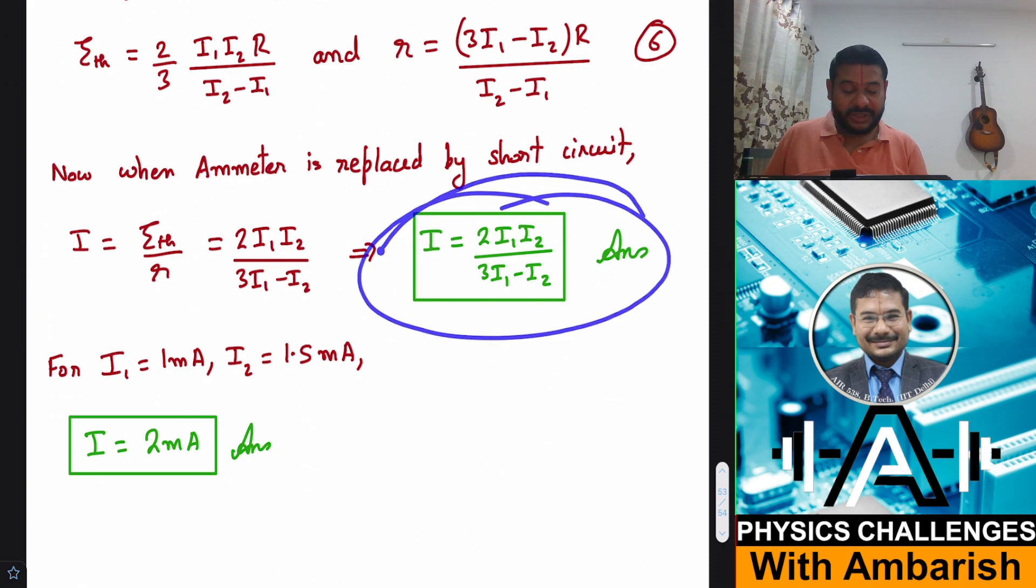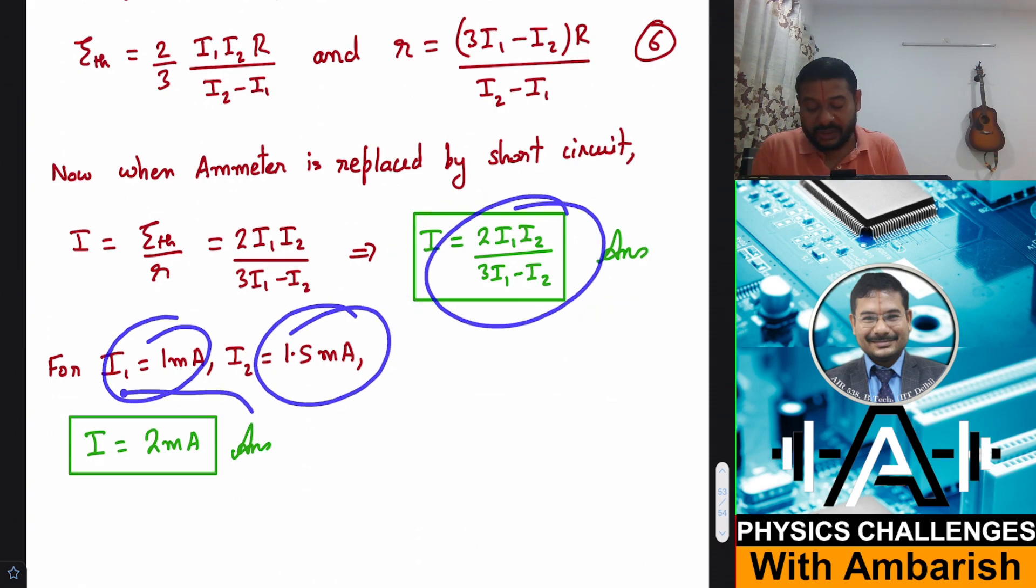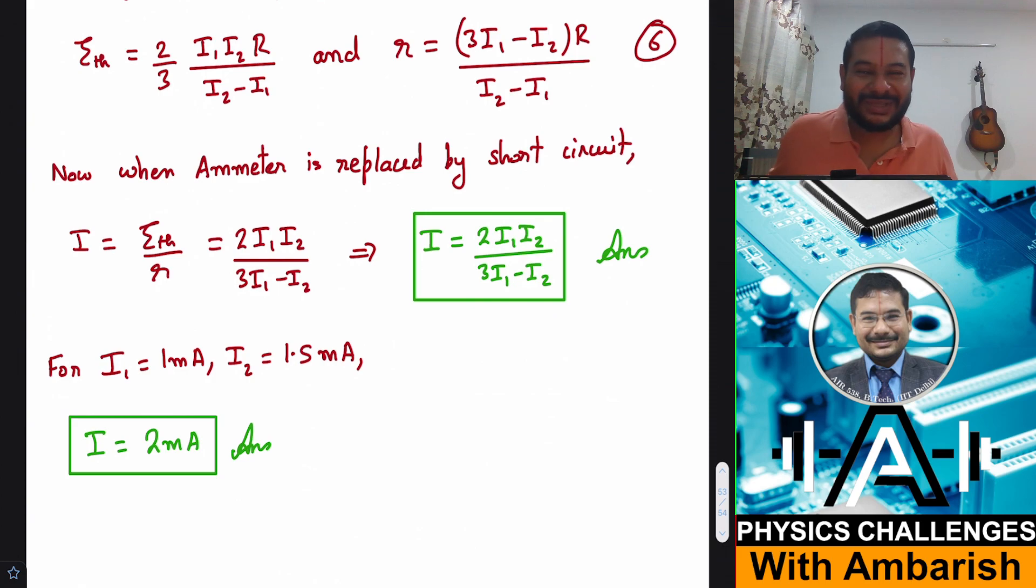So that is simply you divide these two terms and you get this as the current. So this is my answer for the expression of the current in the original circuit in absence of the ammeter. And if you put in the values I1 is 1 milliampere, I2 is 1.5 milliampere, if you solve it you get 2 milliampere.